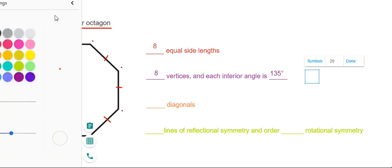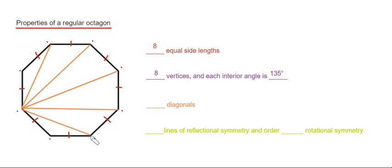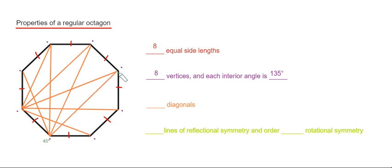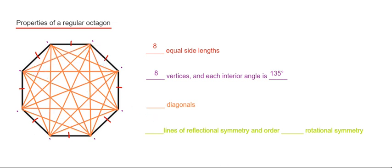Now let's count the number of diagonals then next. The diagonals go from corner to corner. So let's start with this one here. So we've got one, two, three, four, five, six, seven, eight, nine, ten, eleven, twelve, thirteen, fourteen, fifteen, sixteen, seventeen, eighteen, nineteen, and twenty. So we have 20 diagonals.